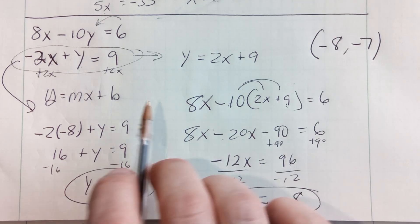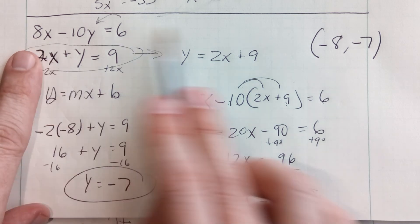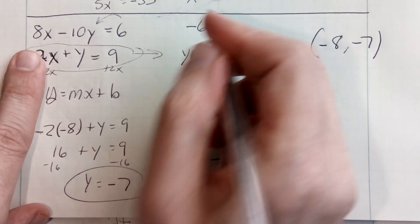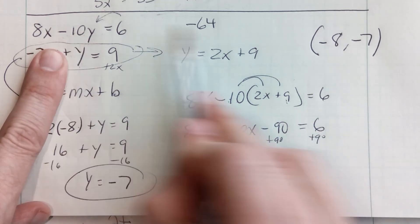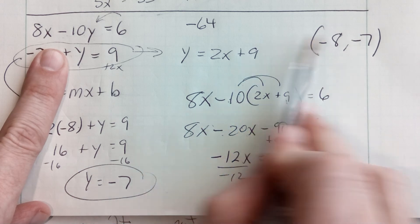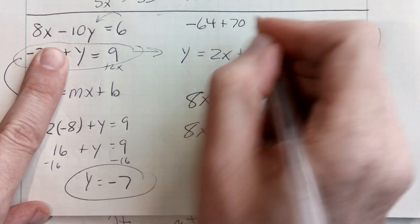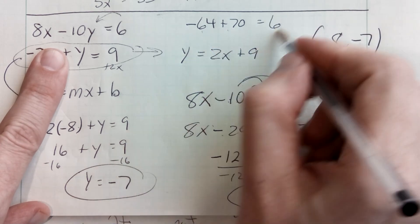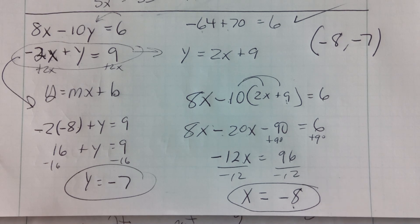I want to make sure this is right, so I'm going to try it in the top equation. What's 8 times negative 8? That's negative 64. What's negative 10 times negative 7? That's positive 70. And that better equal 6 when I add them — and it does. So I've done it correctly. If you have any questions, please do bring them to class and I will help you then.